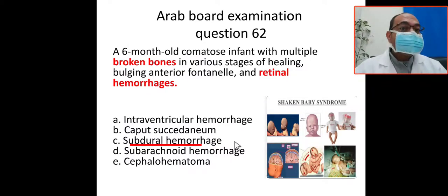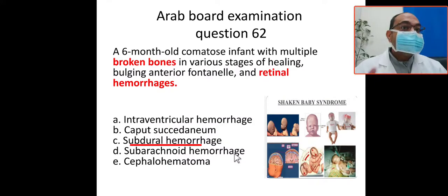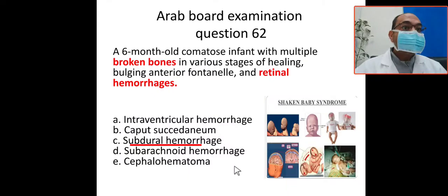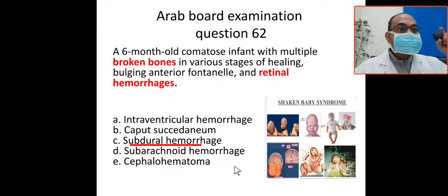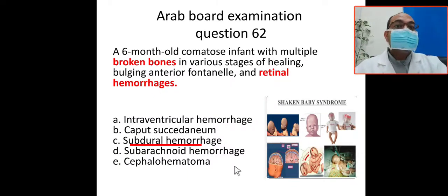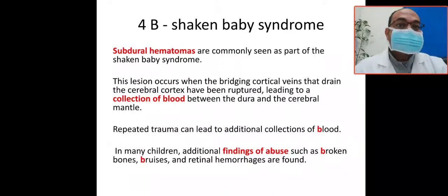Subdural hemorrhage is common in child abuse or shaken baby syndrome. Intraventricular hemorrhage is common in premature infants. Subdural is common in child abuse. Subarachnoid is common in full-term infants and is usually benign. Cephalohematoma does not cross the suture line — that is a characteristic feature.